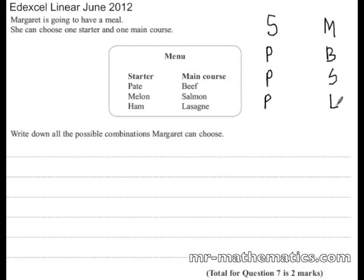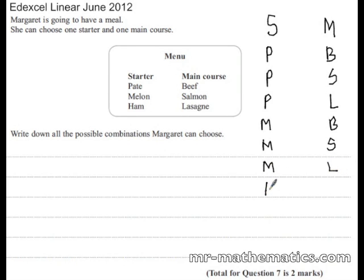Now to keep it logical, we will do the melon and the beef, the melon and the salmon, and the melon and the lasagna. We will do the same order for the ham: ham and beef, ham and salmon, and finally the ham and lasagna.